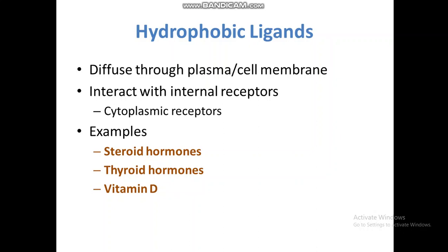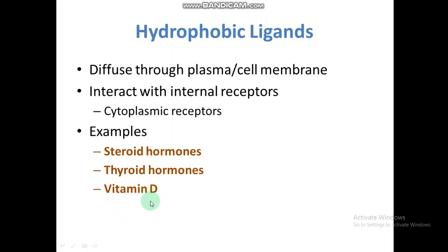Hydrophobic ligands diffuse through the cell membrane or plasma membrane and interact with internal receptors, also called cytoplasmic receptors. Examples of hydrophobic ligands are steroid hormones like corticosteroids, thyroid hormones like thyroxine, and vitamin D.